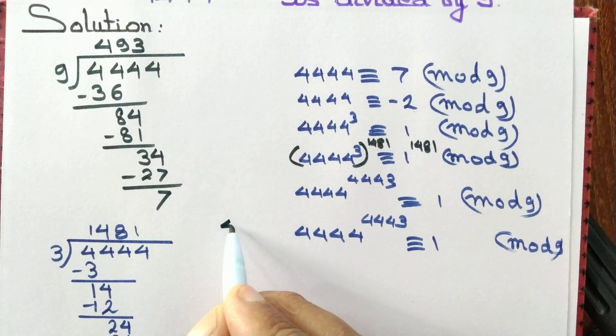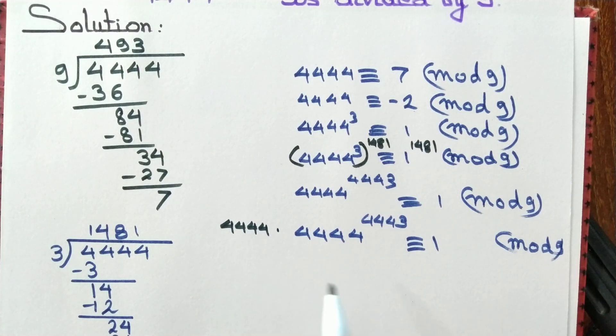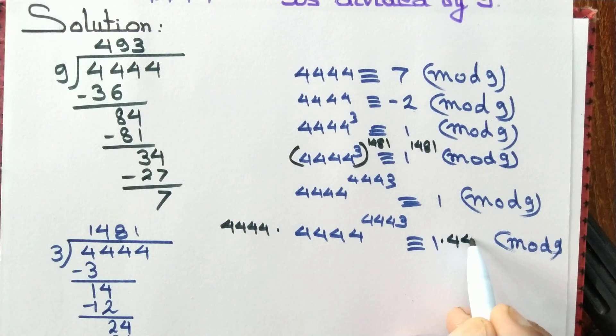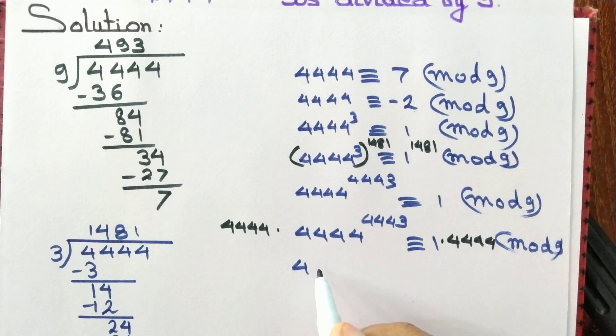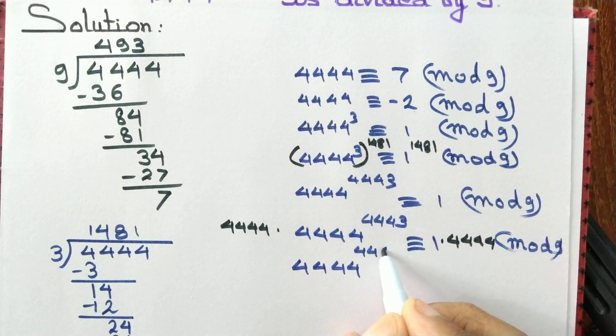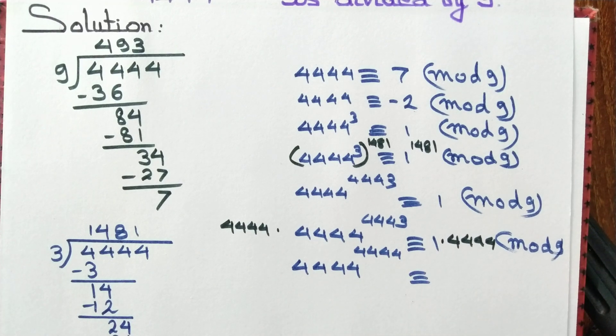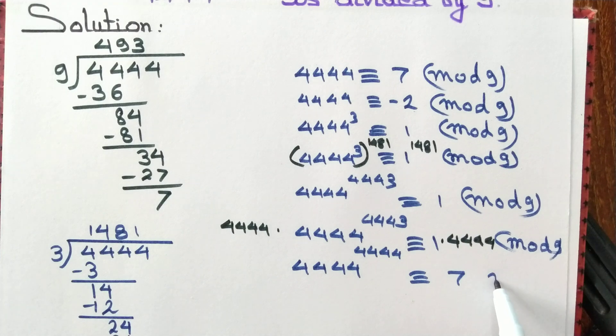So we multiply left hand side by 4444; when we do so we should multiply right hand side by 4444 again. So we get the congruence 4444 to the power 4444 is congruent to 4444, but as we have seen earlier, 4444 is congruent to 7 mod 9. So this is congruent to 7 mod 9.